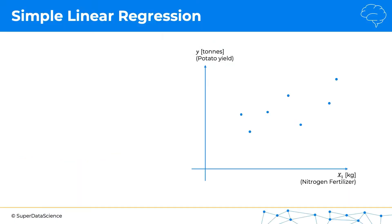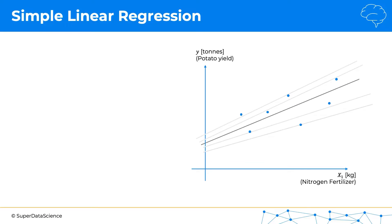Ordinary least squares: we have our data points, and the question we're answering in this tutorial is how do we know which sloped line is the best one? There can be multiple sloped lines we can draw through our data points. How do we know which is the best linear regression, and how do we even define the best one? To answer those questions, we need to look at a method called the ordinary least squares method.